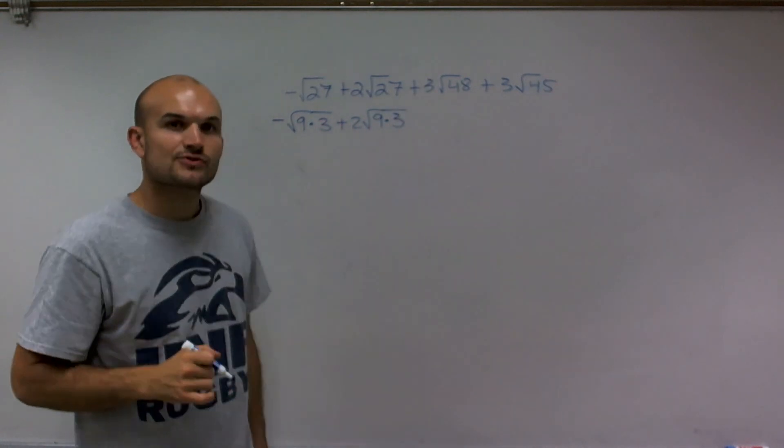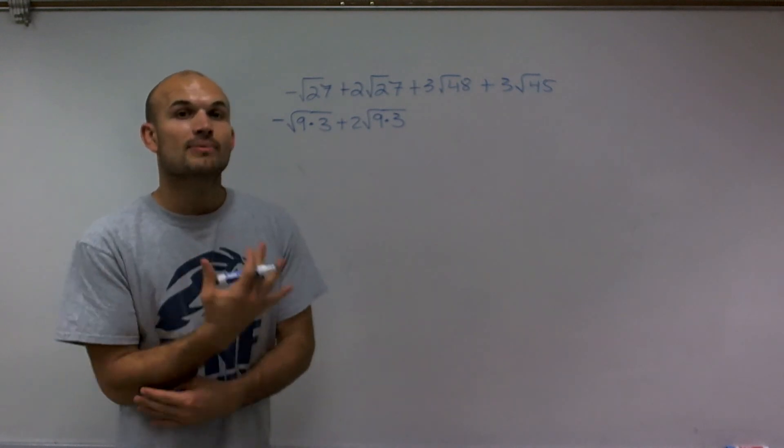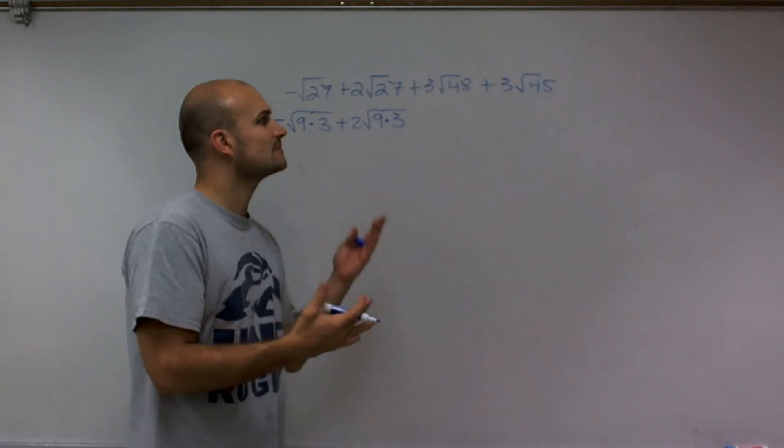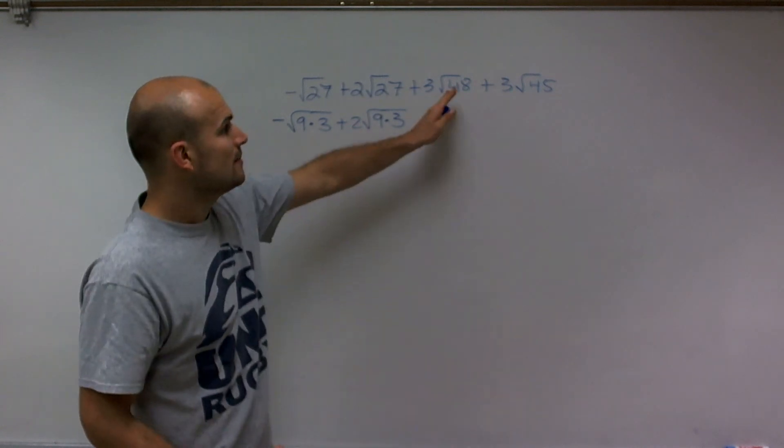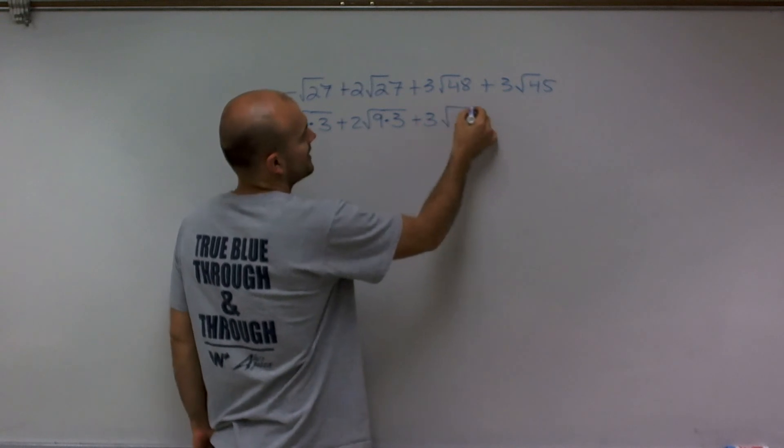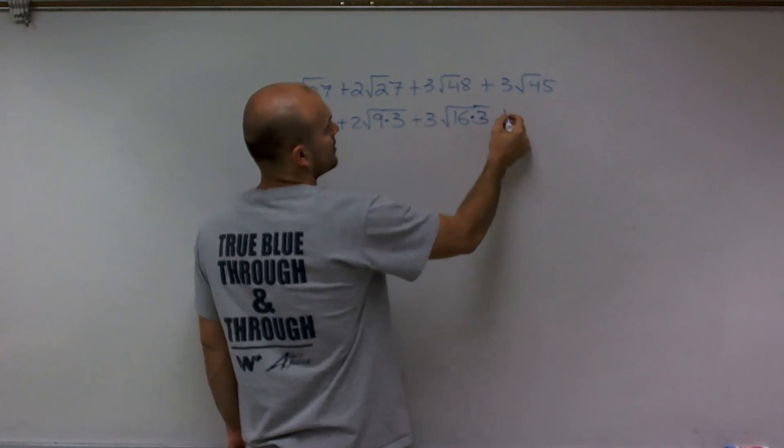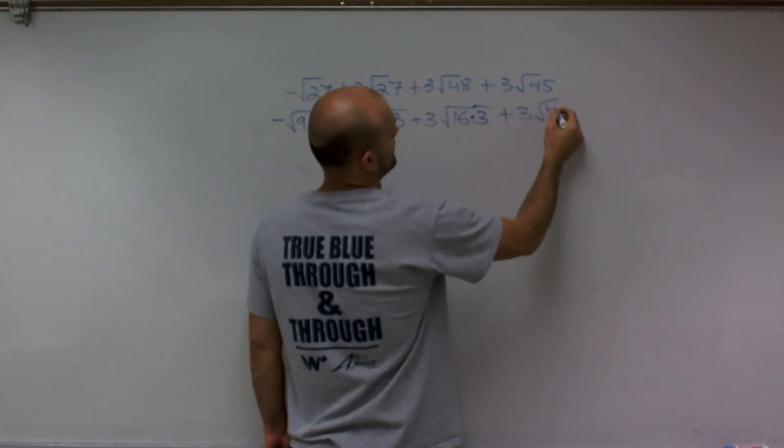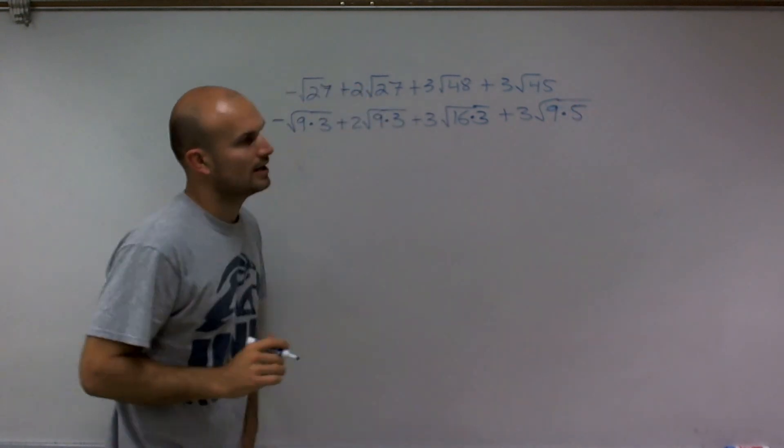I can rewrite the square root of 48. I know it is divisible by 4, by 8. But you want to write in what is the largest square number that goes into 48? I can rewrite that as 16 times 3 plus 3 square root of 45 can be rewritten as 9 times 5.